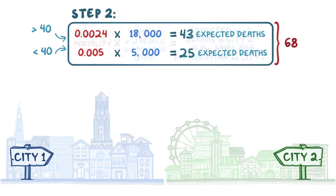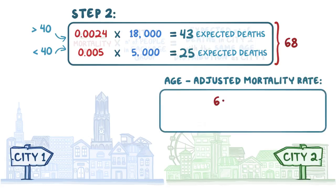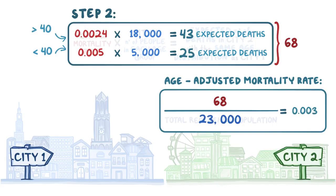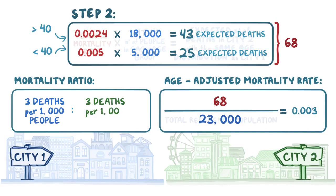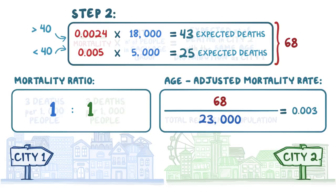We can use this number to calculate the age-adjusted mortality rate for City 2, which is the total number of expected deaths, 68, divided by the total reference population, 23,000, which equals .003, or 3 deaths for every 1,000 people in City 2. Finally, we compare the crude mortality rate from City 1 with the age-adjusted mortality rate from City 2 to get a mortality ratio. There are 3 deaths per 1,000 people in City 1 and 3 deaths per 1,000 in City 2. Dividing both sides by 3, we get a ratio of 1 to 1.